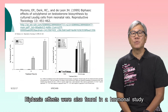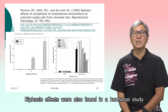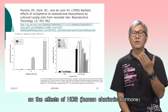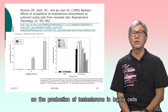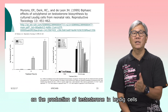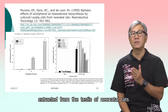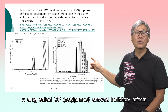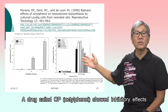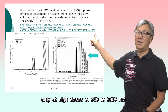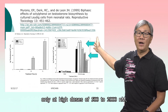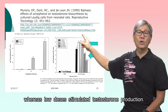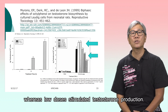Biphasic effects were also found in a hormonal study on the effects of hCG, human chorionic gonadotropin, on the production of testosterone in Leydig cells extracted from the testes of neonatal rats. A drug called octylphenol showed inhibitory effects only at high doses of 500 to 2000 nanomolar, whereas low doses stimulate testosterone production.